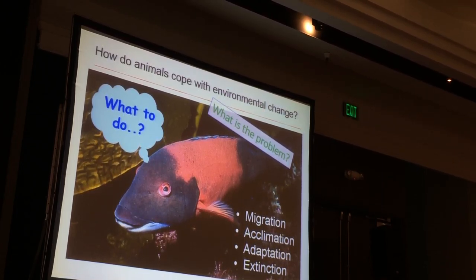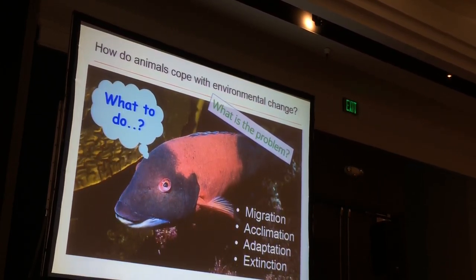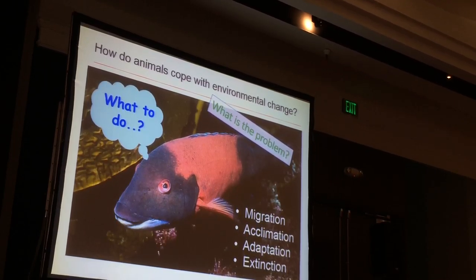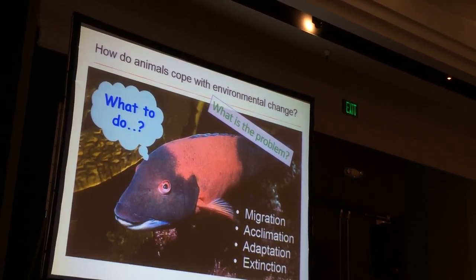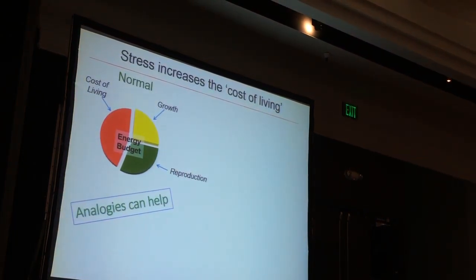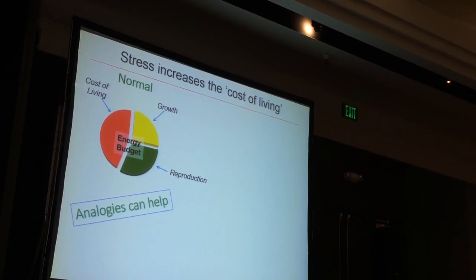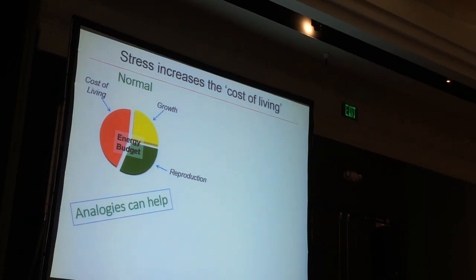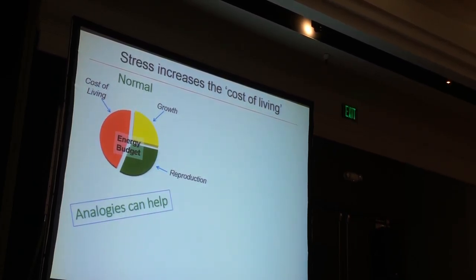Define what the problem is. What are you talking about with this scientific graph? How do animals cope with change? You can summarize what's going on. Tell stories and try to relate things to personal experience rather than just showing some pie graph and saying they're allocating energy towards three groups: cost of living, growth, and reproduction. Put it in human terms.